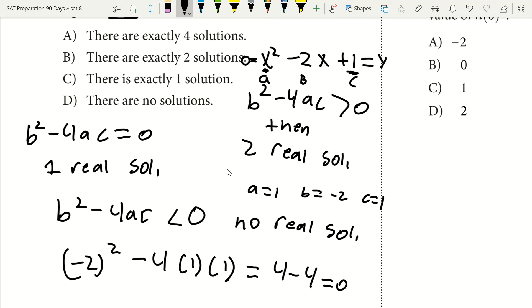So since b squared minus 4ac equals 0, we know there's going to be exactly one solution. So our answer there will be C.